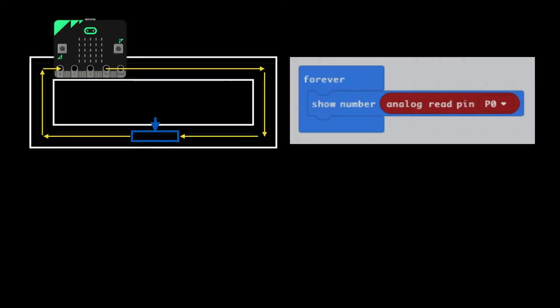And we do that using a piece of code. As the resistance changes, the number on pin 0 will change. So we can read the number on the analog pin 0 and show it.